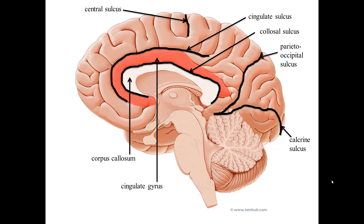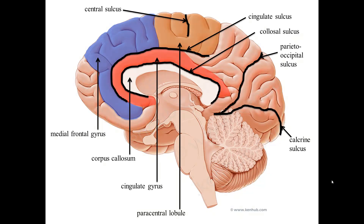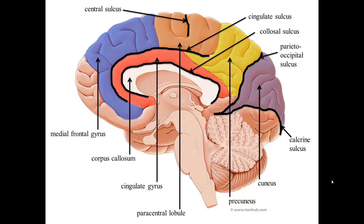Remaining gyri of the cerebrum from anterior to posterior are the medial frontal gyrus, which is part of the frontal lobe superior to the cingulate gyrus; the paracentral lobule, which is partly frontal and partly parietal lobes as it is made of the precentral and postcentral gyri surrounding the central sulcus; the precuneus, which is part of the superior parietal lobule; the cuneus, which is part of the occipital lobe found between the parietal occipital sulcus and the calcarine sulcus; and the lingual gyrus, which is also part of the occipital lobe inferior to the calcarine sulcus.